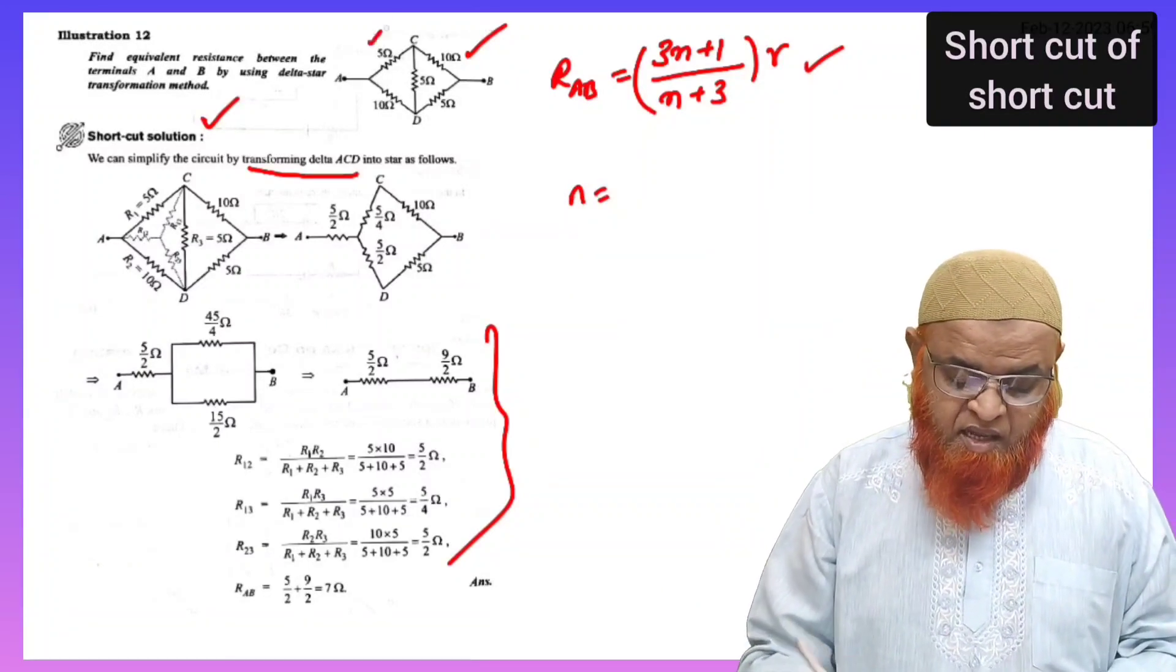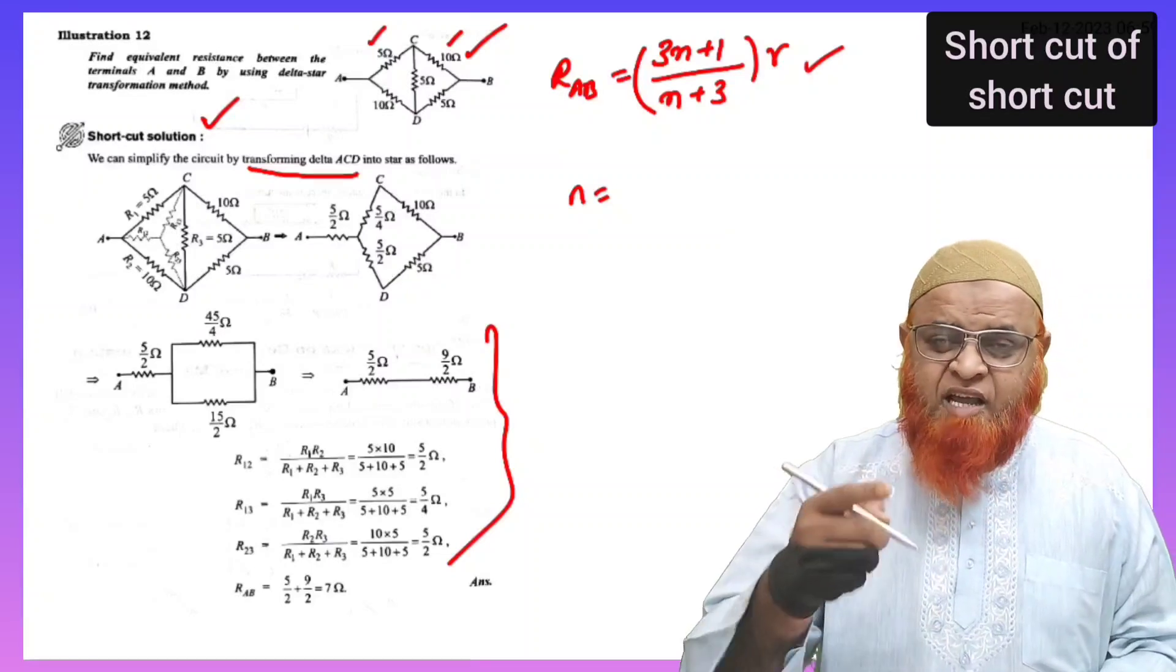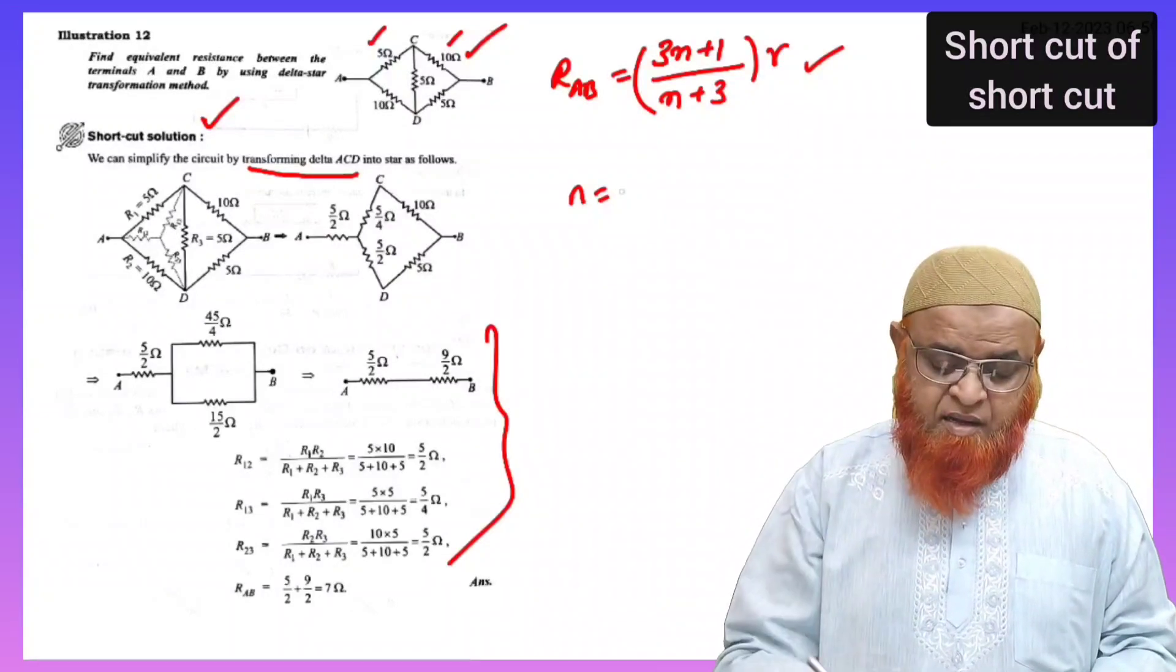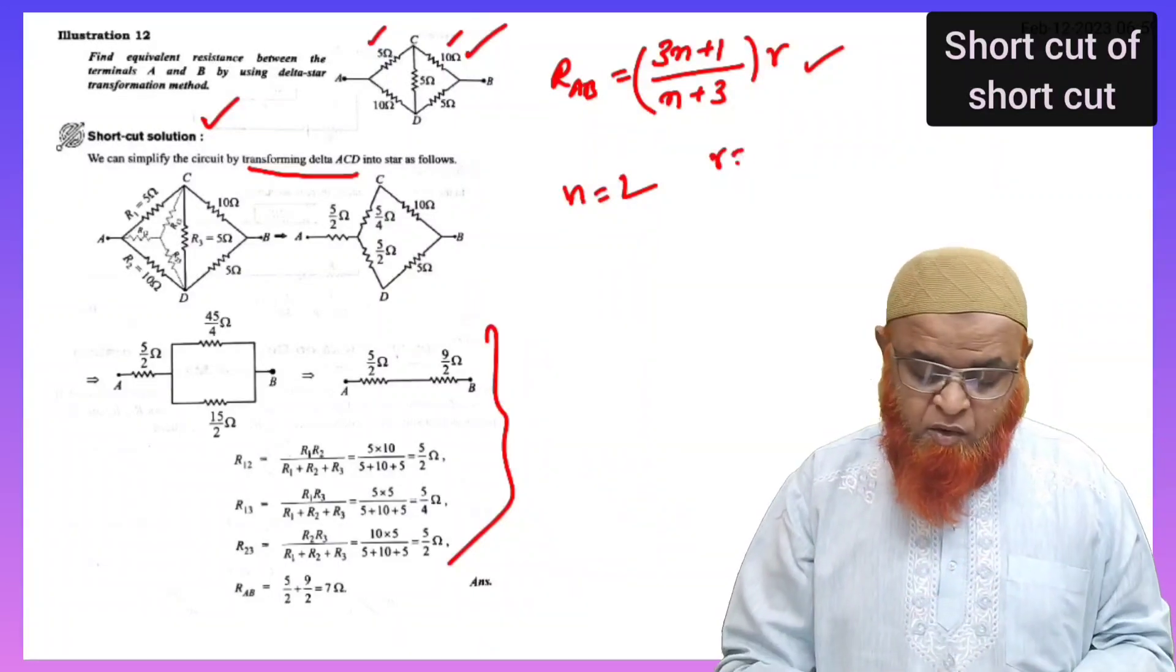Here, what is N? N is nothing but here 5 is there, here 10 is there. How many times 5 is of 10? So, that is N equal to 2 you will get because 5 times 2 is 10. N equals 2.